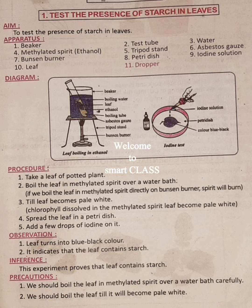Procedure. Step 1: Take a leaf of a potted plant. Step 2: Boil the leaf in methylated spirit over a water bath. Step 3: Continue till the leaf becomes pale white.